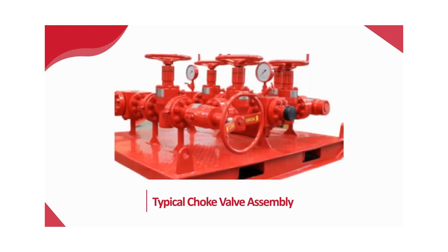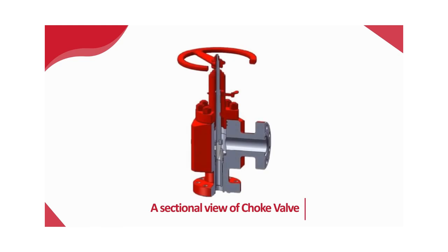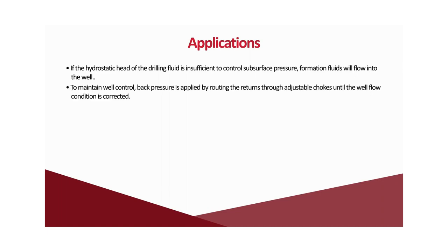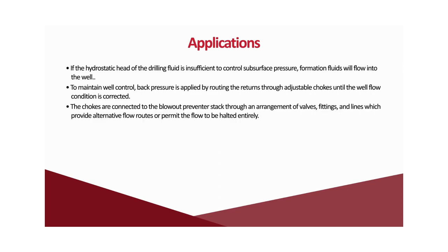Let us see a visual representation of a typical choke valve assembly. This is how a sectional view of a choke valve looks. If the hydrostatic head of the drilling fluid is insufficient to control subsurface pressure, formation fluids will flow into the well. To maintain well control, back pressure is applied by routing the returns through adjustable chokes until the well flow condition is corrected. The chokes are connected to the blowout preventer stack through an arrangement of valves, fittings, and lines which provide alternative flow routes or permit flow to be halted entirely. This equipment assemblage is designated as the choke manifold.